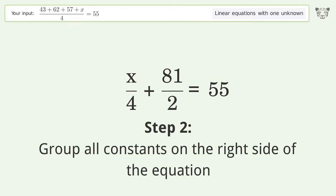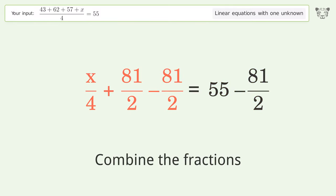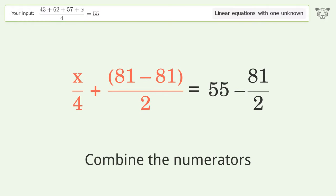Group all constants on the right side of the equation. Subtract 81 over 2 from both sides. Combine the fractions. Combine the numerators.